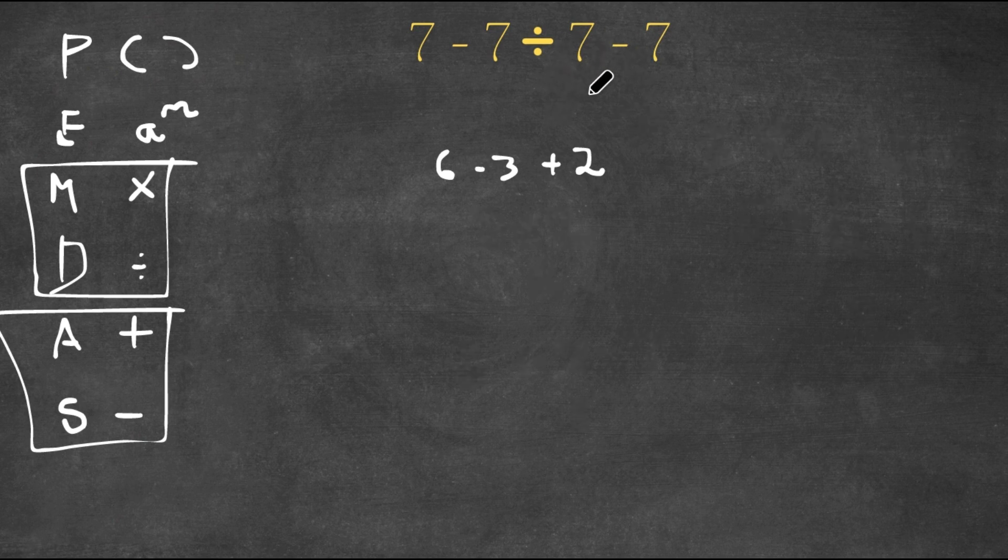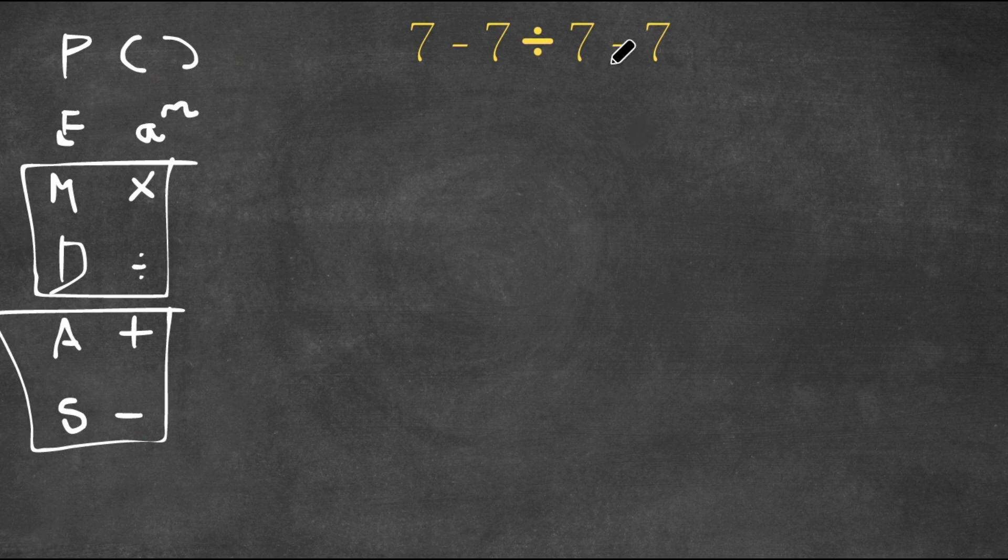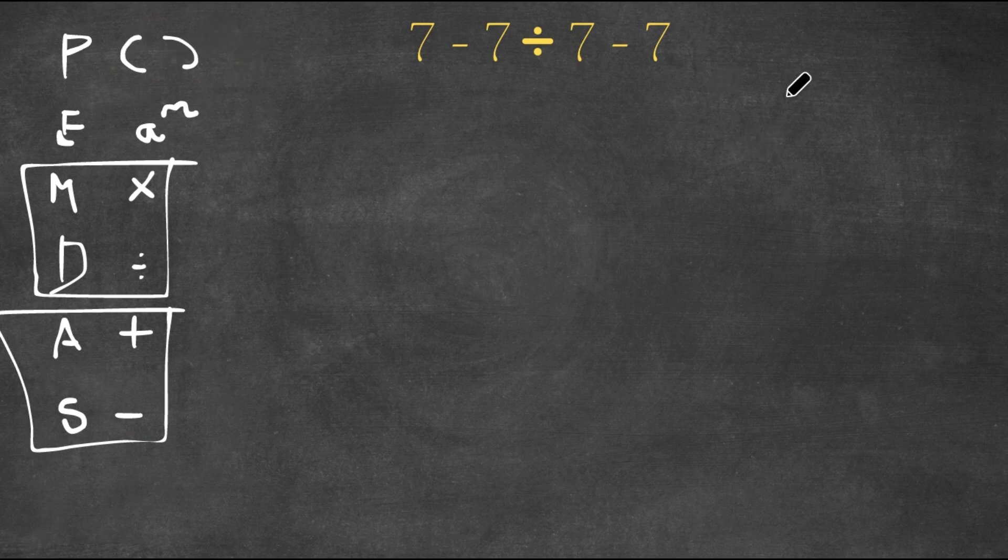So now let's go ahead and try to solve this problem: 7 minus 7 divided by 7 minus 7. So I first go to the start of PEMDAS. Check for parentheses - there are no parentheses. Then I go to the next one, exponents - there are no exponents. Then I check for multiplication and division, and as I see there is division, 7 divided by 7. So now I have to do the division.